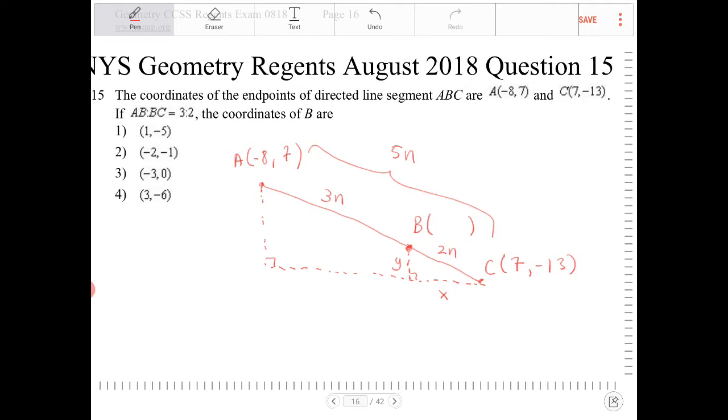In the big triangle, I am aware of the horizontal dimension here. So let's see here. 7 minus negative 8, that's 15. So this segment here is 15.